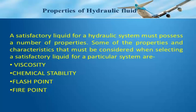A satisfactory liquid for a hydraulic system must possess a number of properties. Some of the properties and characteristics that must be considered when selecting a satisfactory liquid for a particular system are viscosity, chemical stability, flash point, and fire point.